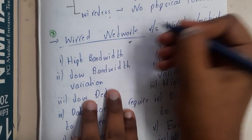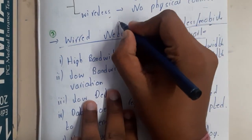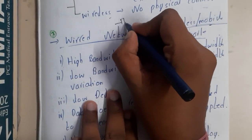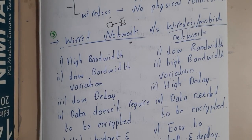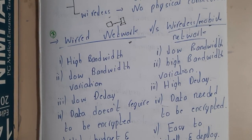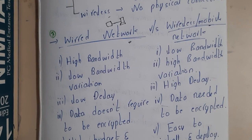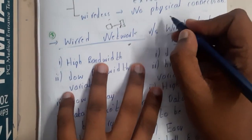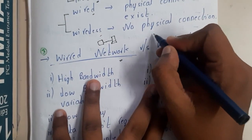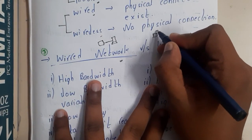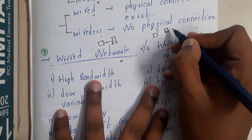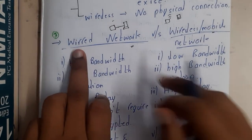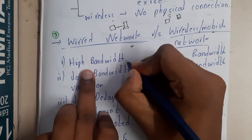Wired means there is a physical connection between your system and the internet service provider. I'll be taking the example of wired and wireless with respect to internet because that is the simplest way to understand this. Whereas in wireless, your device gives Wi-Fi and your mobile connects to it.